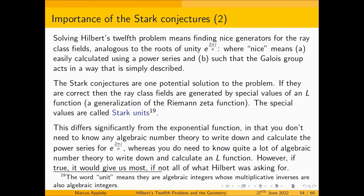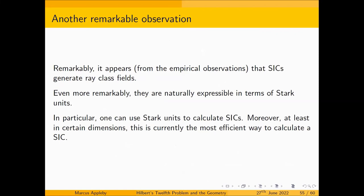If the Stark conjectures are correct, then ray class fields are generated by special values of an L-function, which is a generalization of the Riemann zeta function. It's not as satisfactory as it might be, because to write down the Dirichlet series expansion for an L-function you need quite a lot of algebraic number theory. However, if true, it would give most if not all of what Hilbert was asking for. Going back to SICs, we've seen that SICs amazingly generate ray class fields — and what is perhaps even more amazing is they produce the Stark units too. And it works the other way: you can use Stark units to calculate SICs.